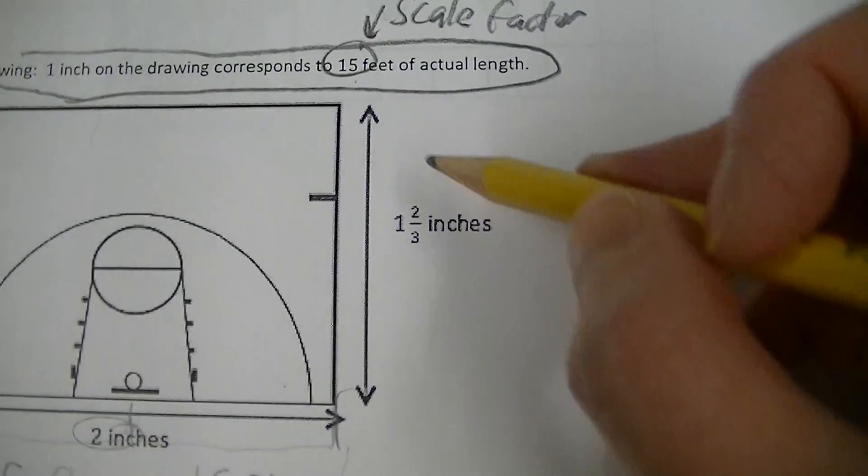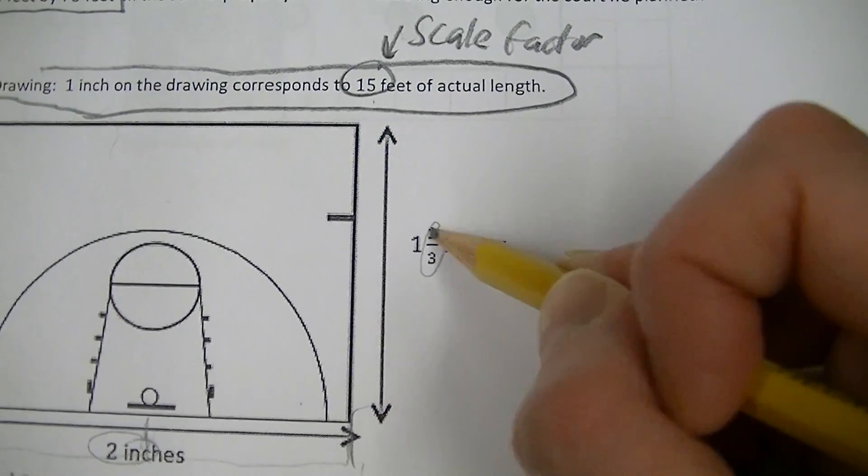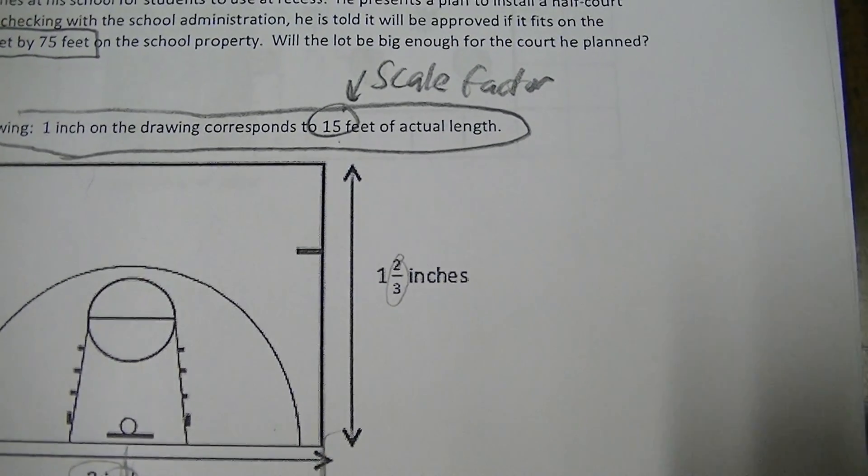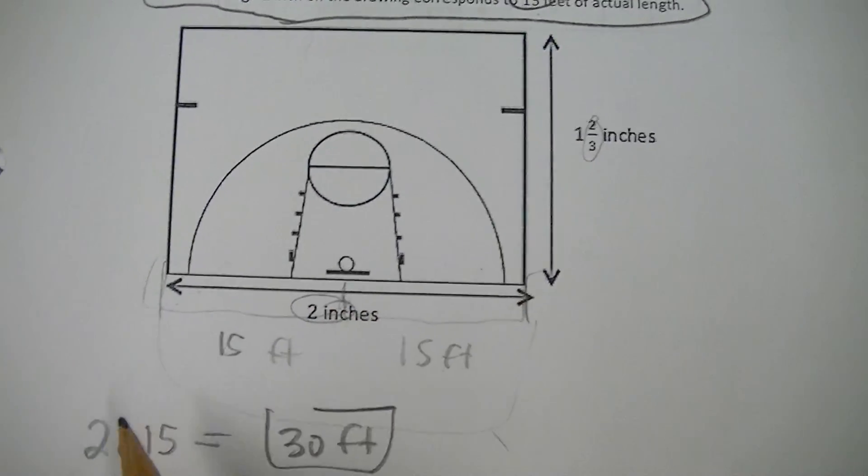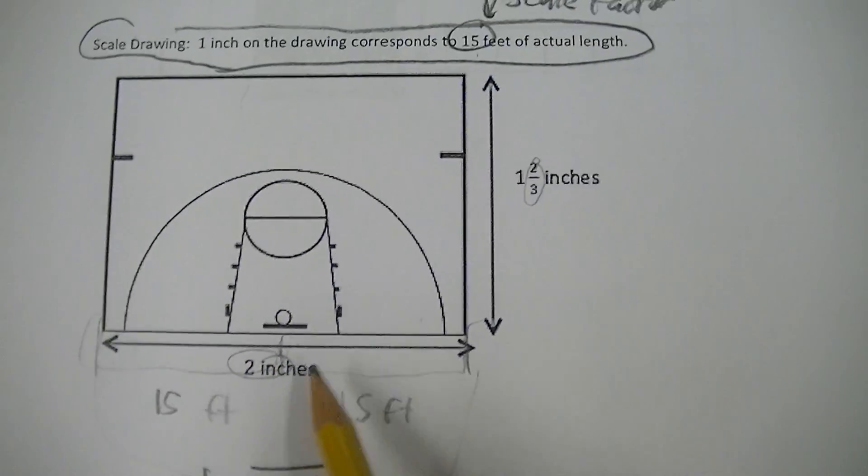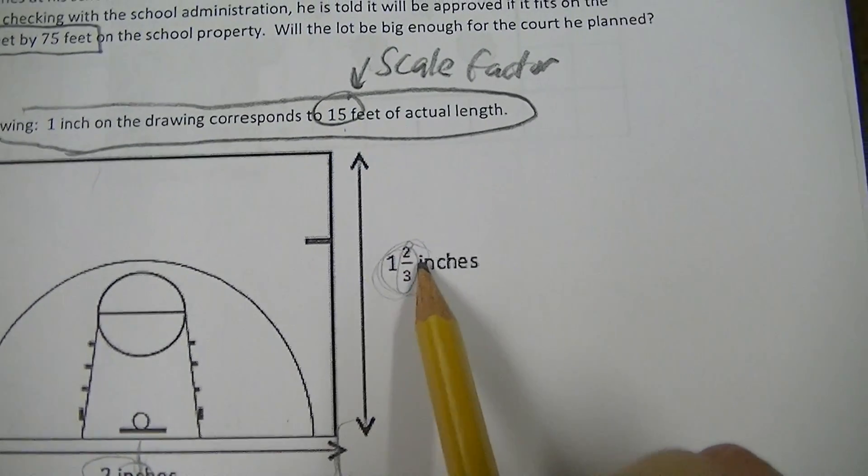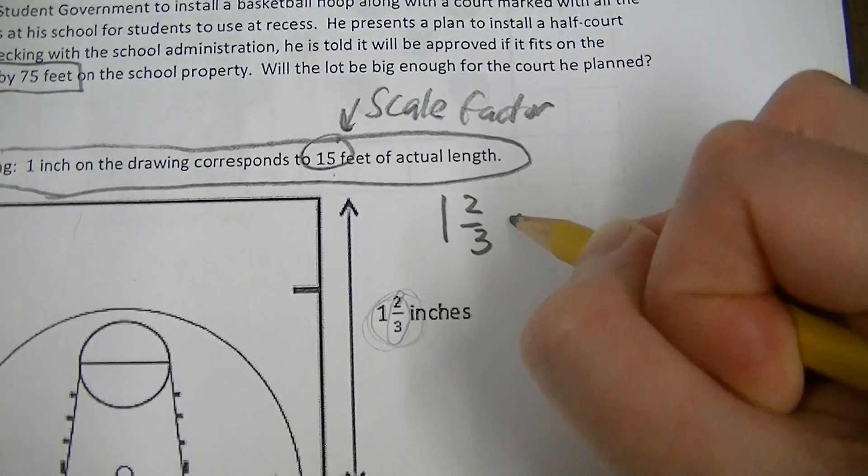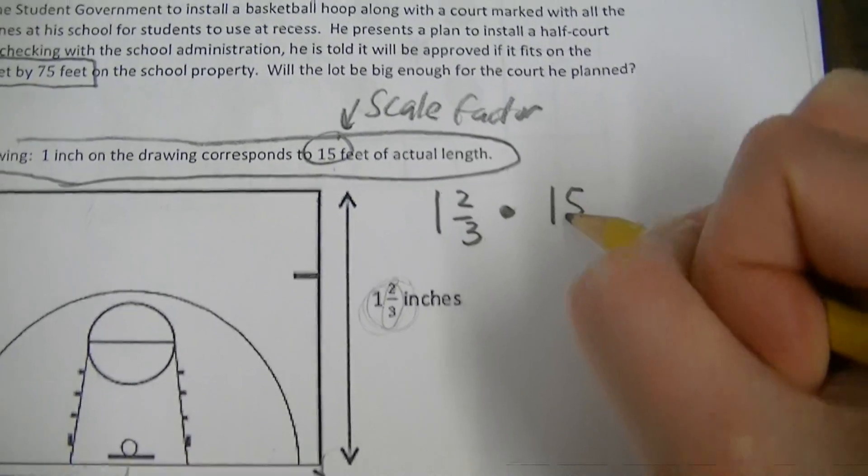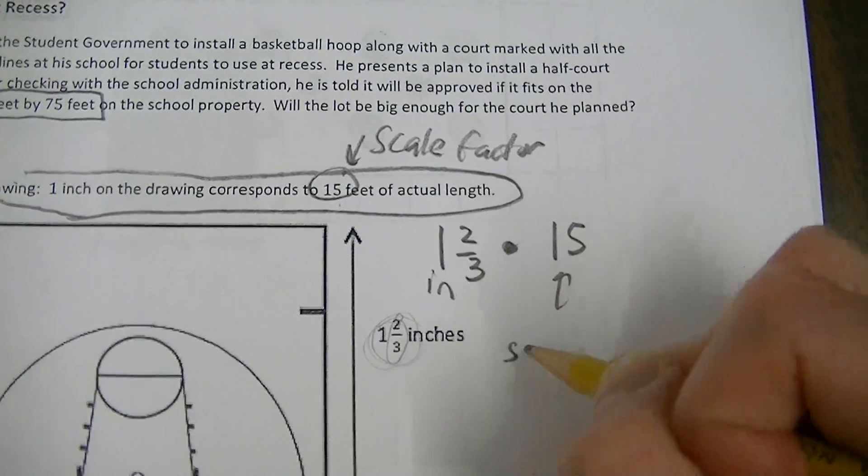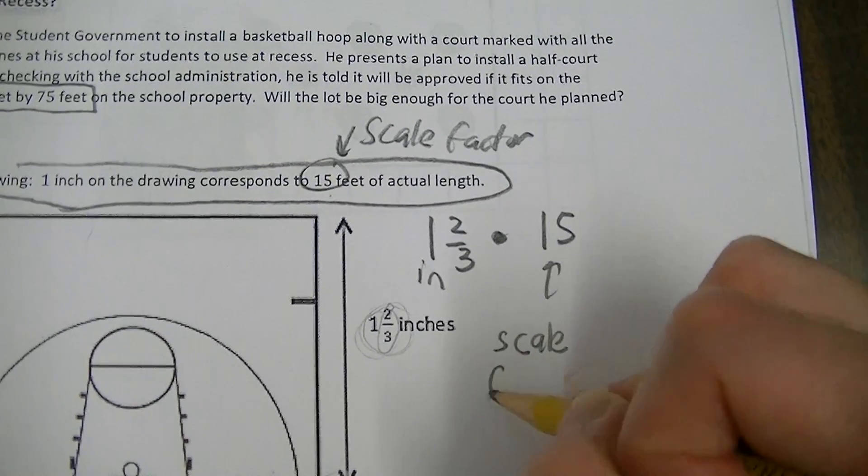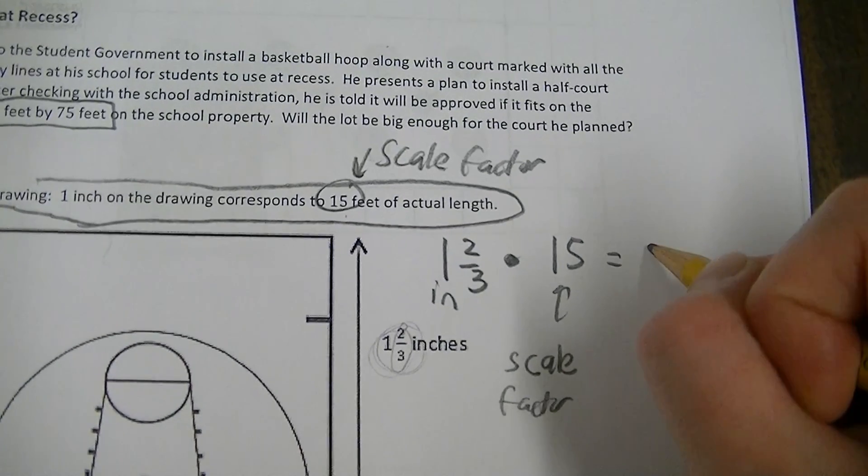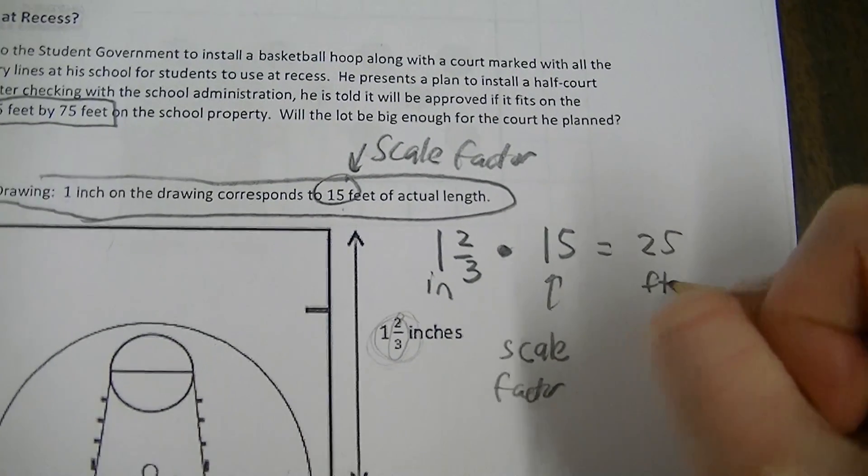So you'll see up here that this length from here to here is 1 and 2 thirds inches. So that makes it a little bit more challenging, but don't let that stop you, okay? So we started with 2 times that scale factor. So just because that's a fraction doesn't mean that you need to freak out, okay? So you're just taking 1 and 2 thirds. You're multiplying it by 15, which is the scale factor. And you should be able to get that. What is that? That is 25 feet, okay?